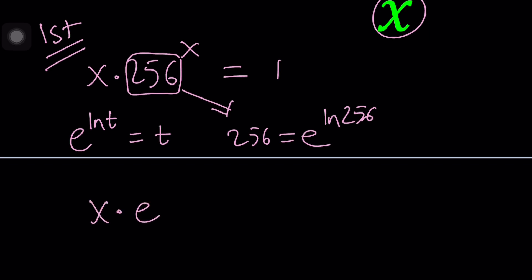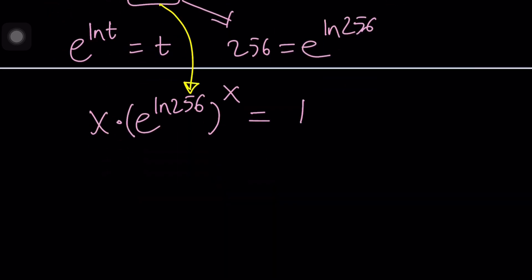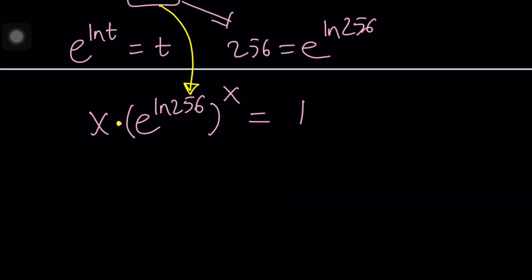How do we use it? Plug it in. x times e to the power ln 256, and then we need to raise it to the power x and that equals 1. We just used substitution. Now, this gives us something nice after a little bit of manipulation. x times, now here we multiply the exponents, so that gives us e to the power x times ln 256 equals 1.